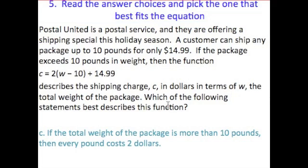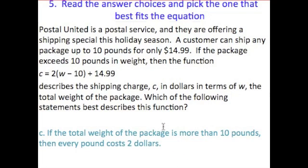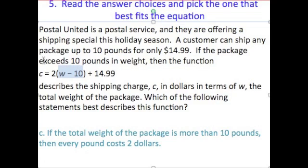Let's look at choice C: if the total weight of the package is more than 10 pounds, then every single pound costs $2. This one's a bit tricky. The function says $2 times the weight of the package minus 10 — it's not every single pound. We're not being charged $2 per pound for every single pound. We're being charged $2 per pound for every pound that exceeds 10 pounds in weight.